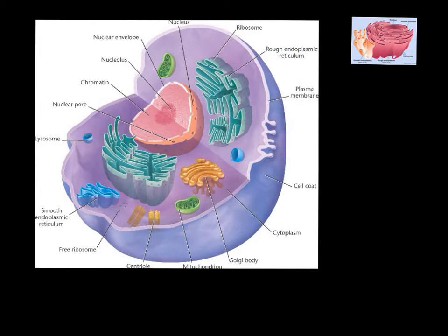The picture on the screen is an animal cell. On the outer edge we have the nuclear membrane, also known as the nuclear envelope, which controls what goes in and out of the cell. We also have the nucleus.